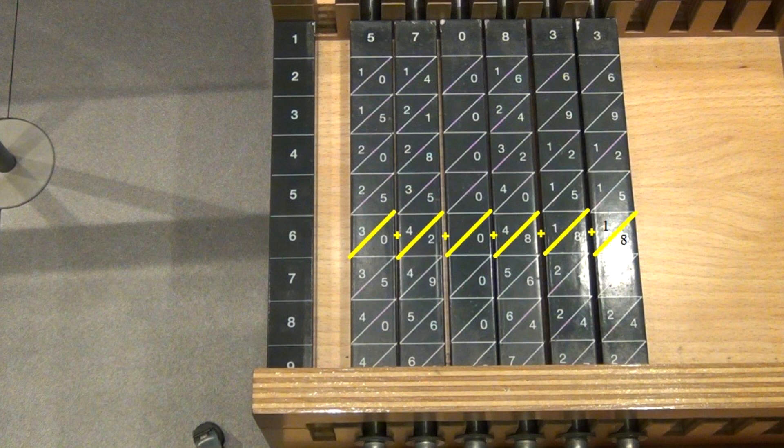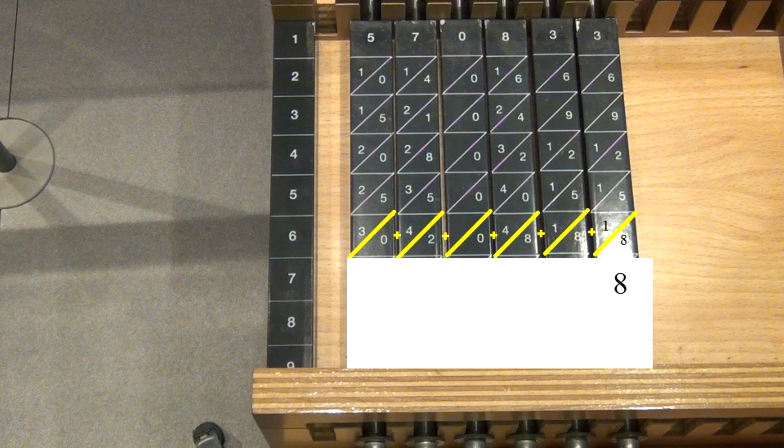You can now start to read off the result. You start with the least significant digit on the right hand side and proceed to the left. The first digit is an 8. 8 plus 1 makes 9. And another 9. 0 plus 4 equals 4. And 2 plus 0 is 2. Another 4 plus 0 equals 4. And the last number is a 3. That gives us the overall result, which is 3,424,998.